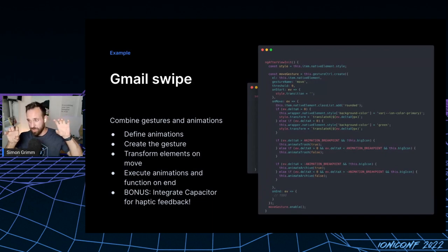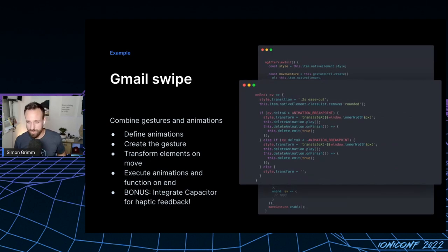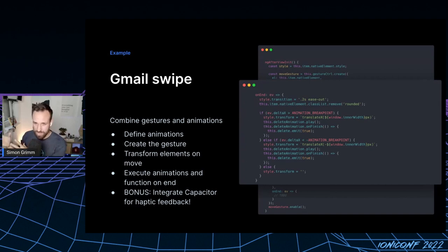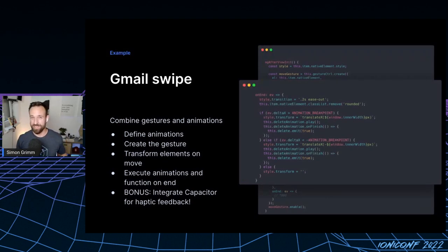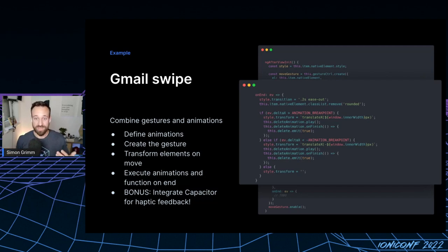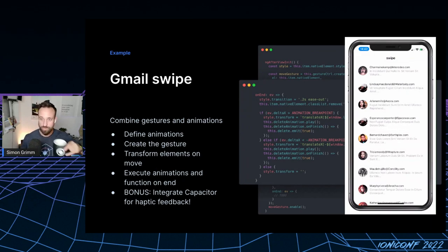On gesture end we can either go back to default — easing out the transformation and removing the rounded class — or trigger the archive/delete animation: move the item out of view and run the delete animation collapsing the row height to zero. Importantly, Ionic provides an on-finish callback for animations, because if you remove the item from the iteration while the animation is running, everything will collapse unexpectedly. The on-finish callback lets you safely remove the item after the animation completes. And here's my implementation — so satisfying. Really, this is my favorite thing.